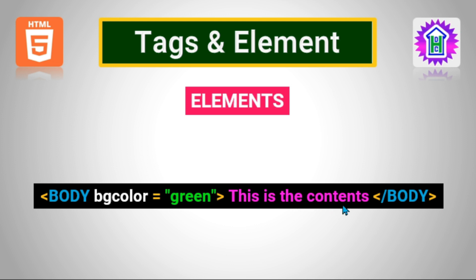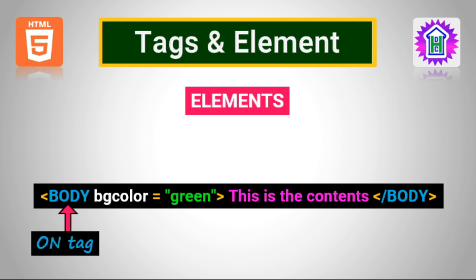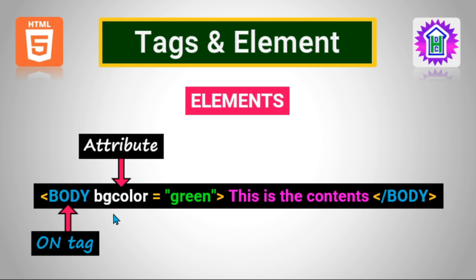Let us mark which part is called what. Here, body is the start tag, also called the on tag, that defines the body of the HTML document. Then bg color is an attribute used to set the background color of the page, and the value of that attribute is set to green, so the background color of this page will be green. Then we have written 'this is the content', which will be displayed in the body area.